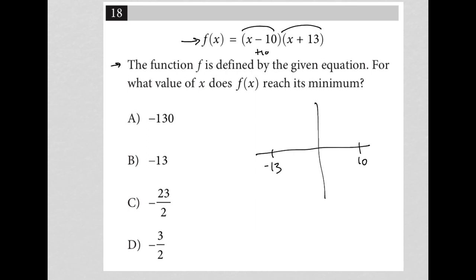So those would be my x-intercepts. How do I know that? Well, when you have an x-intercept, your y-value is 0. In order for the product of these two binomials to equal 0, one way in which that happens is x is 10, because 10 minus 10 becomes 0, and 0 times this is 0. Another way in which that happens is x equals negative 13.